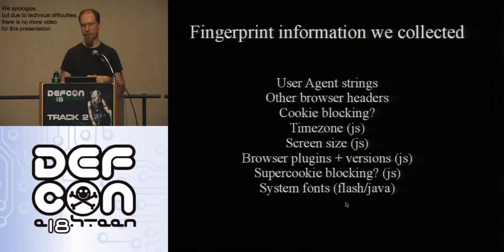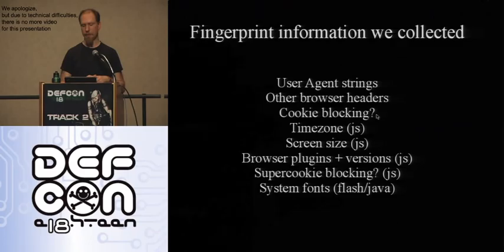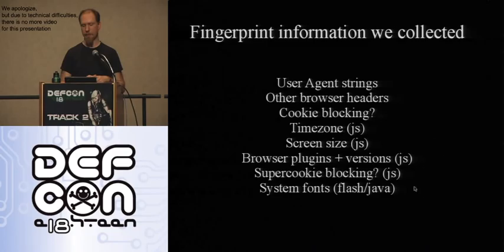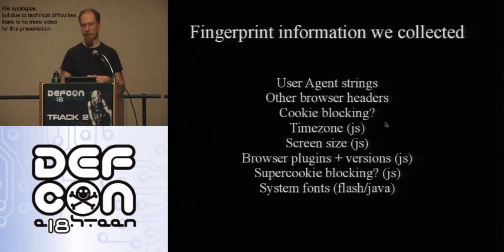These are the eight measurements we had. The top three were things you always send to a web server when you request a page. The next four come from JavaScript — a little script runs in the page, and if JavaScript is enabled it collects this information and sends it back via HTTP POST. Lastly, if you have Flash or Java installed, we go into those plugins and ask for your list of system fonts. It turns out the two most problematic measurements are the plugin list and the fonts.